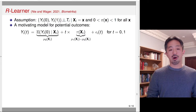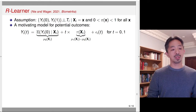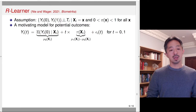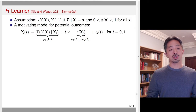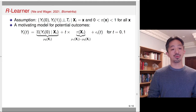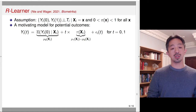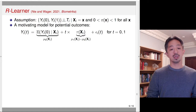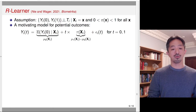A motivating model for the potential outcomes is a linear formulation. The potential outcome Y(t) is a linear function of the baseline conditional average function — the conditional expectation of Y(0) given x_i, which I'll call μ_0 — plus the treatment status t times the conditional average treatment effect τ(x_i). Recall that τ(x_i) equals μ_1(x_i) minus μ_0(x_i).